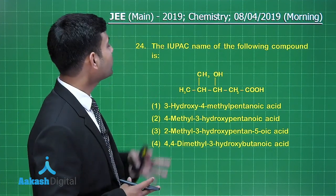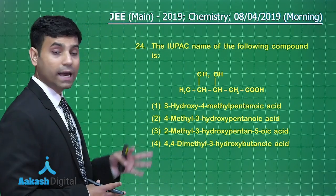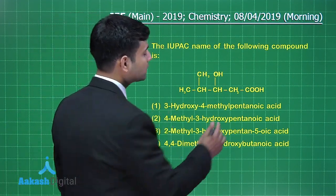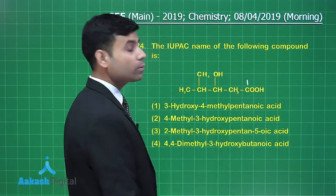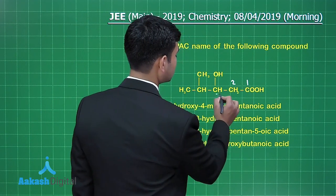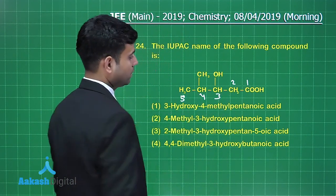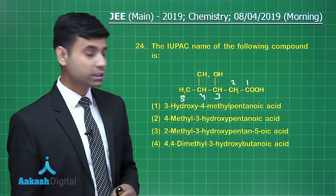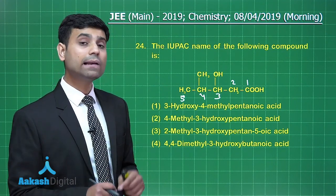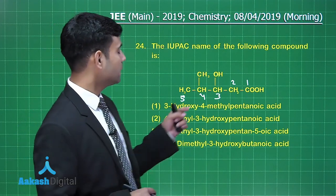The next question asks for the IUPAC name of a given compound. The counting starts from the carbon of the –COOH group, which has the highest priority. Numbering: C1, C2, C3, C4, C5 — so we have a hydroxy group at the third position and a methyl group at the fourth position. In alphabetical order, H (hydroxy) comes before M (methyl).